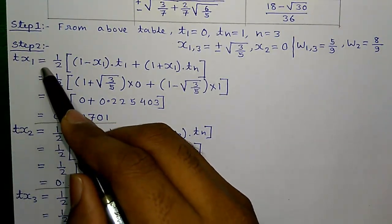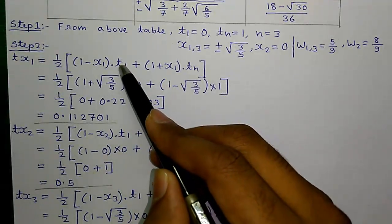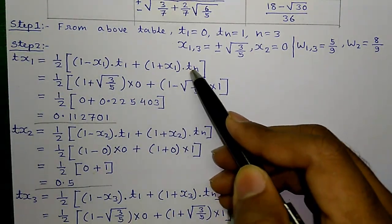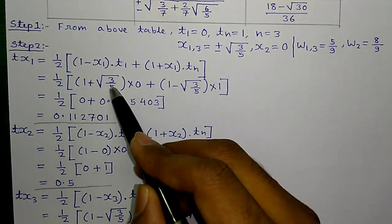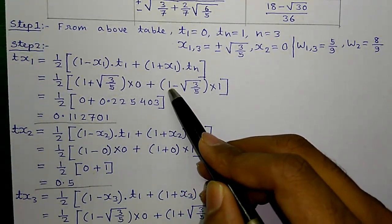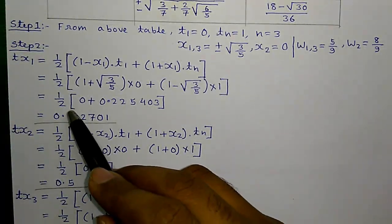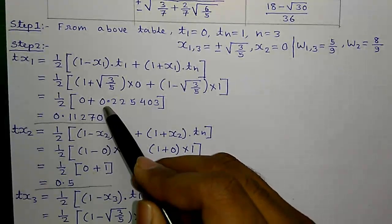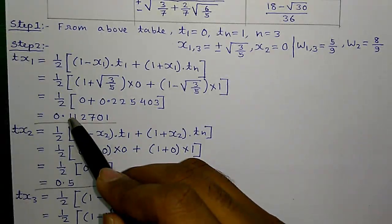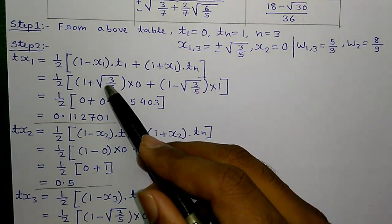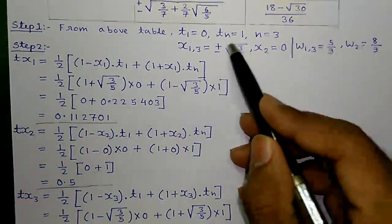Step 2, finding the tx1 which is equals to half into 1 minus x1 times t1 plus 1 plus x1 times tn. tx1 equals to half into 1 plus root over 3 by 5 times 0 plus 1 minus root over 3 by 5 times 1 which is the t1 value, tn value equals to half into 0 plus 0.225403 equals to 0.112701. So, for the first case, we are using the minus part of this.